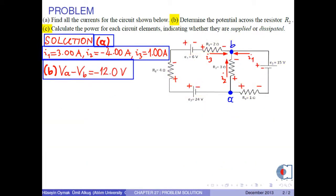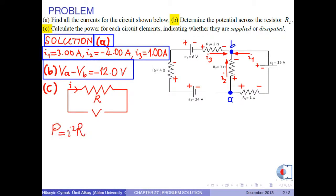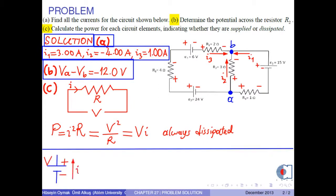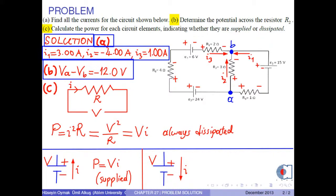Part C: Calculate the power for each circuit element, indicating whether it is supplied or dissipated. For resistors, power is calculated as I²R, or equivalently V²/R or V times I, and it is always dissipated. For batteries, if current flows from low to high potential, power is V times I and it is supplied. If current flows from high to low potential, power is V times I and it is dissipated.